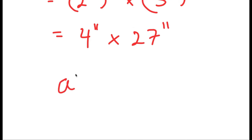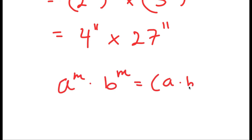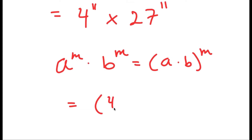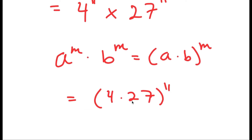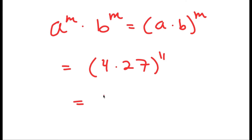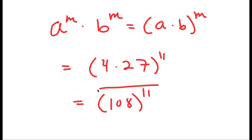Now, using the property a to the power of m times b to the power of m equals a times b to the power of m, this turns into 4 times 27 to the power of 11, which equals 108 to the power of 11. So this is my final answer.